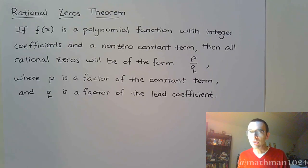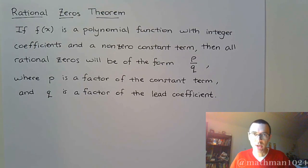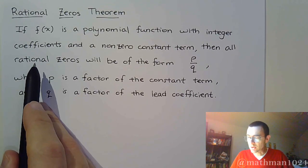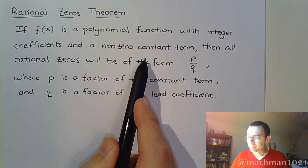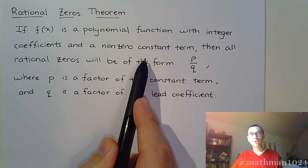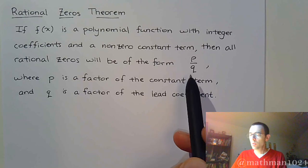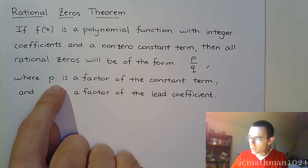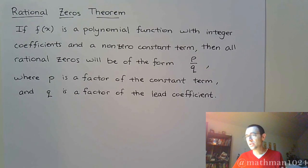This theorem doesn't give us any clue or information about zeros that are complex or that contain radicals — it just tells us information about rational zeros. It says that if you have a polynomial function with integer coefficients and a constant term that's not zero, then any and all rational zeros have to be of the form P over Q. P is going to be a factor from the constant term, and Q is going to be a factor from the leading coefficient. That's always the case if you have a rational zero.